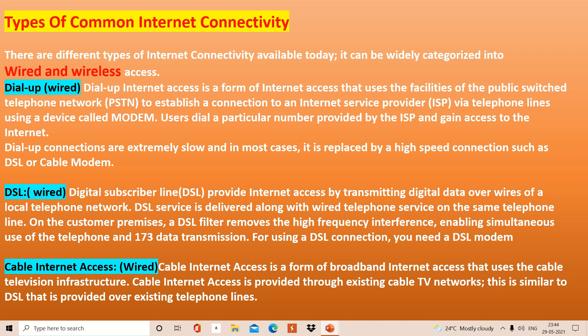The next is DSL — Digital Subscriber Line. This is again a wired connection. It also provides internet connection by transmitting digital data over wired telephone lines. The basic difference between DSL and dial-up is: with dial-up, you can either receive a phone call or access the internet at the same time — not both. But while using DSL, you can simultaneously use both telephone calls and internet connection.